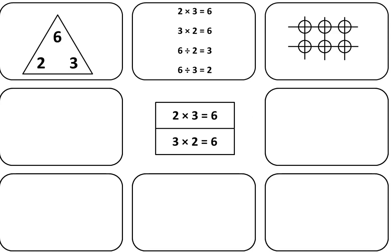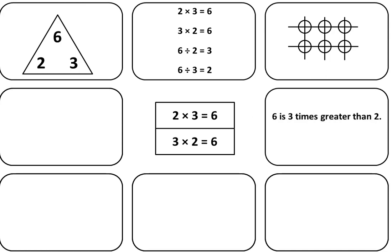Notice that we can see 2 groups of 3 in the circles — here is 1 group of 3, 2 groups of 3. And at the same time, we can also see 3 groups of 2. Let's move to the next space. In the next space, write 6 is 3 times greater than 2, and also write 6 is 2 times greater than 3. These ideas of how much greater the product is than the factor can also be seen in some of the other spaces if you look closely.